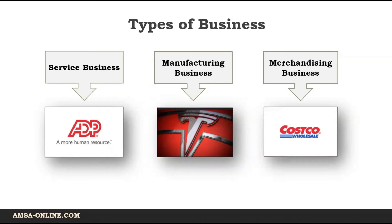Businesses come in all sizes, from a local store to Walmart and Amazon. The objective of most businesses is to earn a profit. Profit is the difference between the amounts received from customers for goods and services and the amounts paid for the inputs used to provide the goods and services. The three types of businesses operated for profit include service business, merchandising business, and manufacturing business.